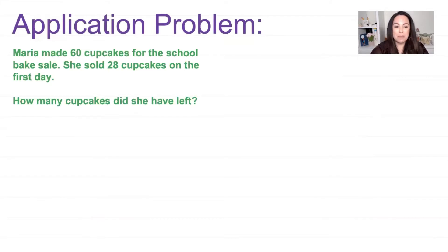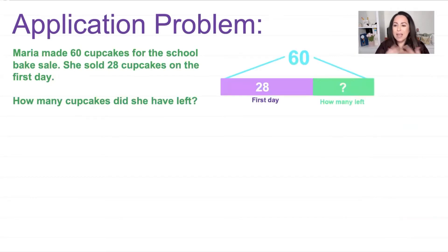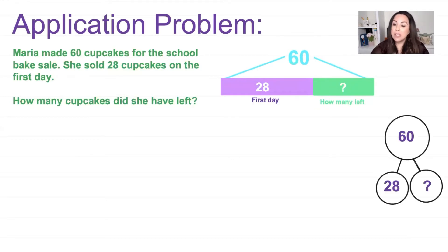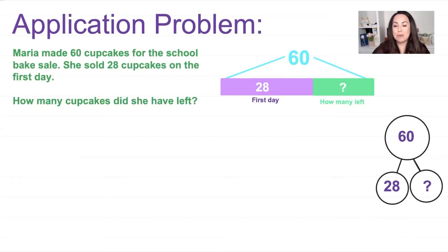Let's start with an application problem. Maria made 60 cupcakes for the school bake sale. She sold 28 cupcakes on the first day. How many cupcakes did she have left? I'm going to use a tape diagram for this. Our whole is 60 because she had 60 altogether, then she sold 28, and we want to figure out how many she had left. We have 60 on top — that's the whole — and part is 28. We've got to figure out the other part using subtraction.